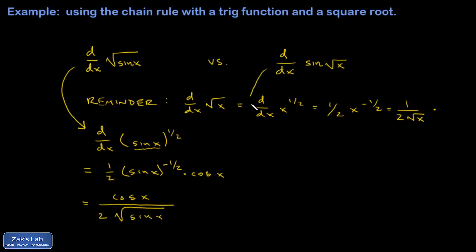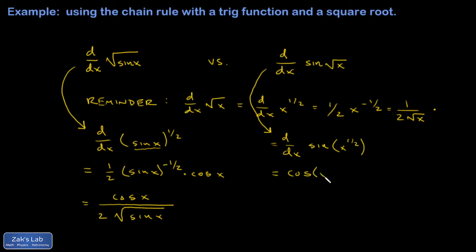Let's see how the other one comes out: the derivative of sine of the square root of x. Again, I'm going to express that root as a power, so it's x to the 1 half. Now the outer function is the sine function and the inner function is the square rooting function. The chain rule says differentiate the sine of this thing with respect to this thing — well, that just gives you the cosine of that thing. Then the chain rule says you have to tack on the derivative of that interior with respect to x, which is 1 half x to the negative 1 half. Writing everything back in terms of square roots, that's the cosine of the square root of x, and then this piece simplifies to 1 over 2 root x.